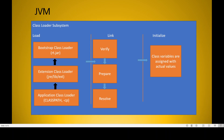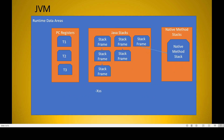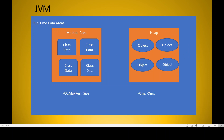Let me go to the runtime data areas. There are five different types: method area, heap area, PC registers, Java stacks, and native method stacks. The method area contains only class-level data, such as class-level static variables, the class-level constant pool, the bytecode, and class metadata that is useful for the reflection API.